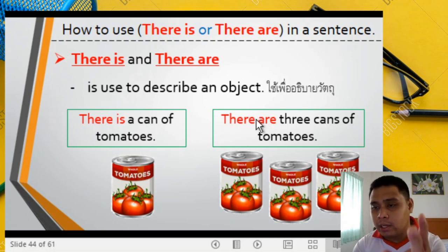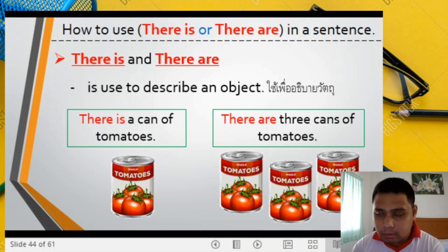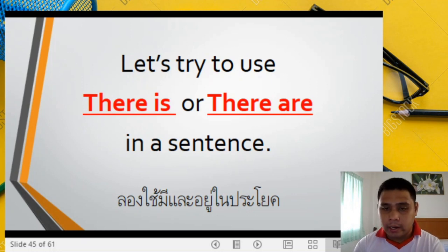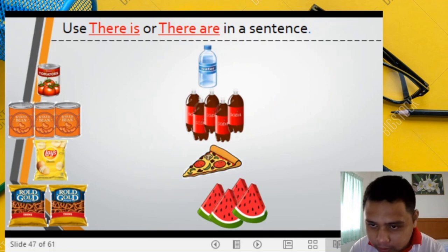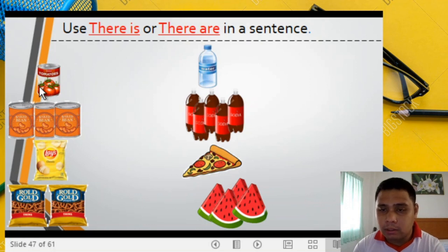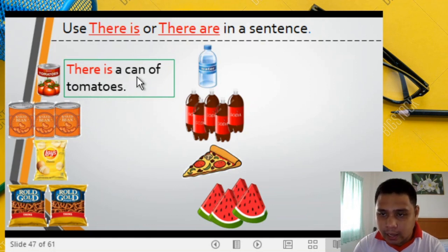Remember: 'there is' is for only one thing. 'There are' is for two, three, four, or more. For example, one sandwich — you say: There is one sandwich, or there is a sandwich. Let's try to use 'there is' or 'there are' in a sentence. We have here: a can of tomatoes. We will use 'there is.' The sentence is: There is a can of tomatoes.